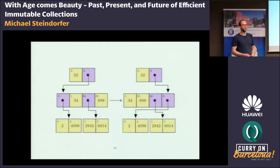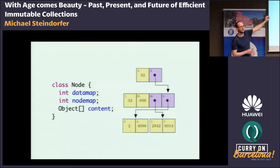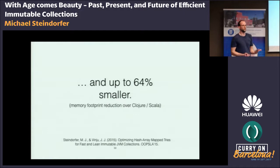Something that changed recently is that the encoding was adapted to group like elements together. All references to subtrees stay on the right, while all data elements stay on the left. If you iterate over the tree data structure, you can yield all data elements first before traversing into subtrees. That gives you speedups of around 6x for iteration compared to traditional Hash Array Mapped Trie implementations. The result is also a much smaller memory footprint compared to the previous state of the art.